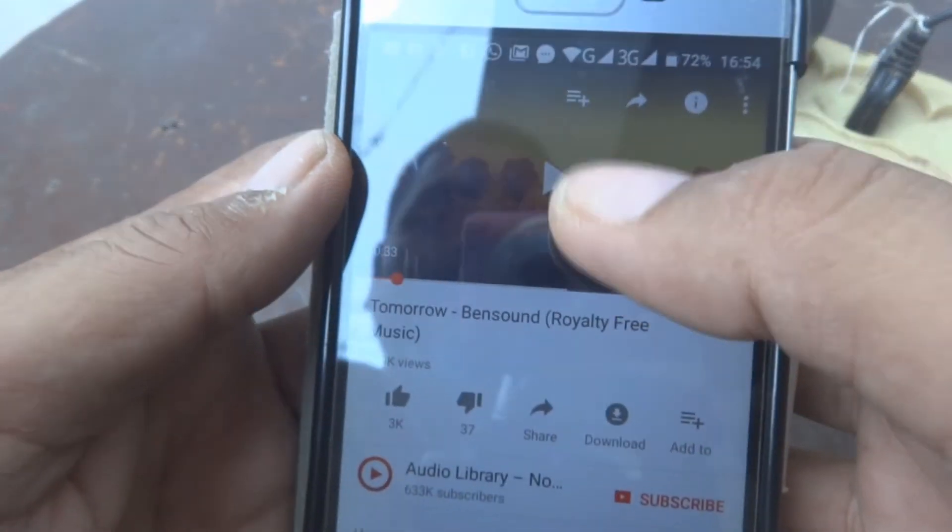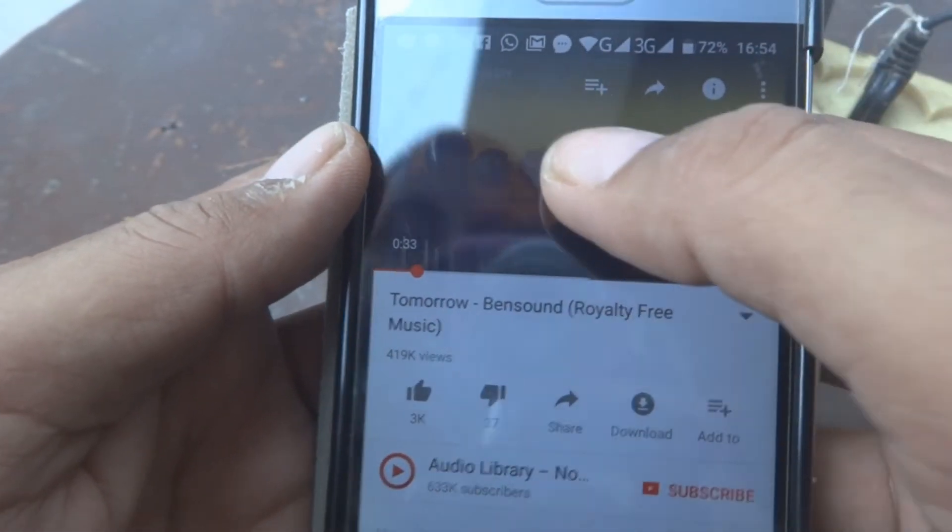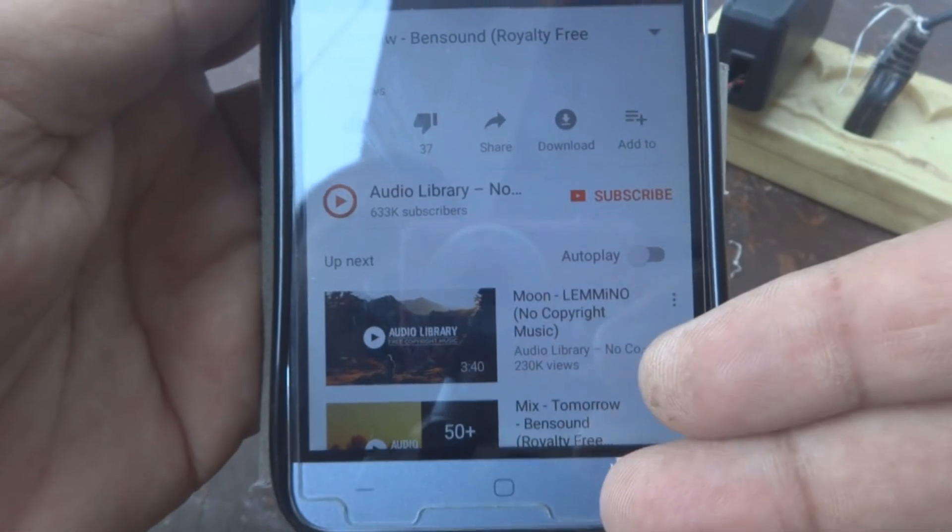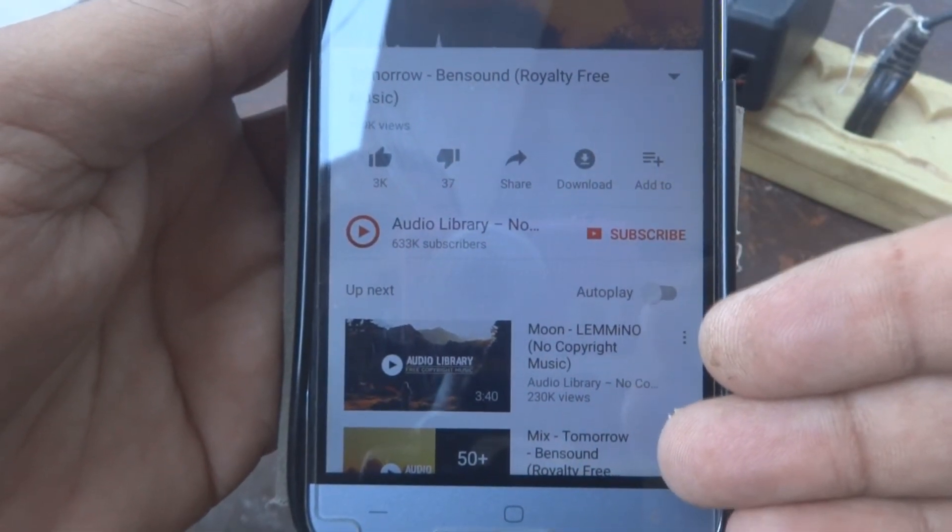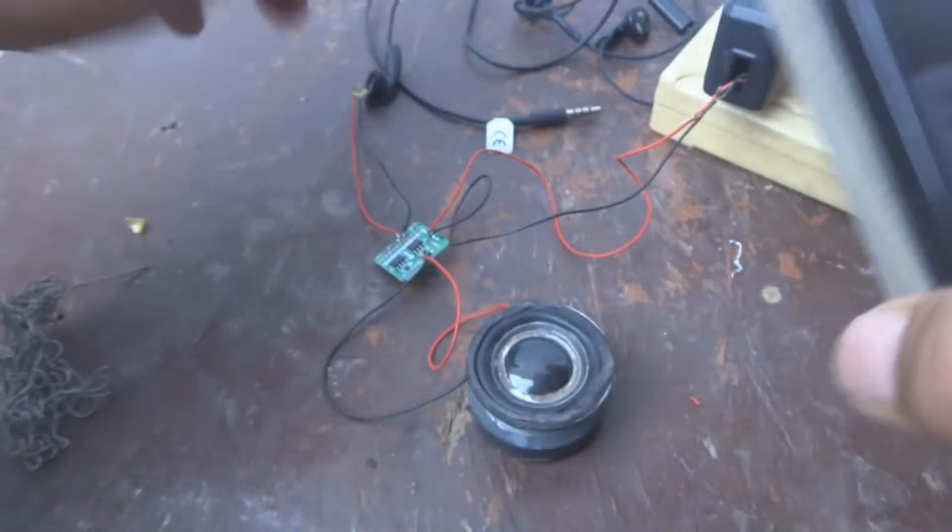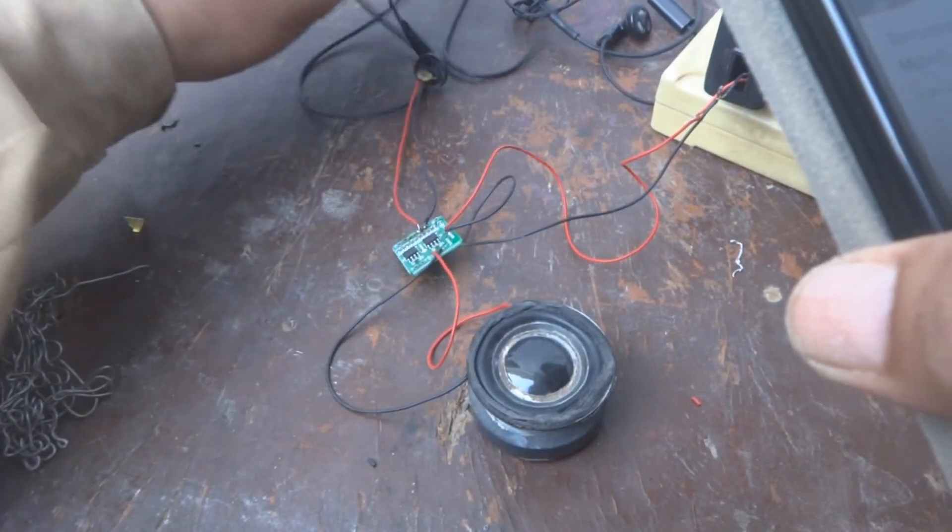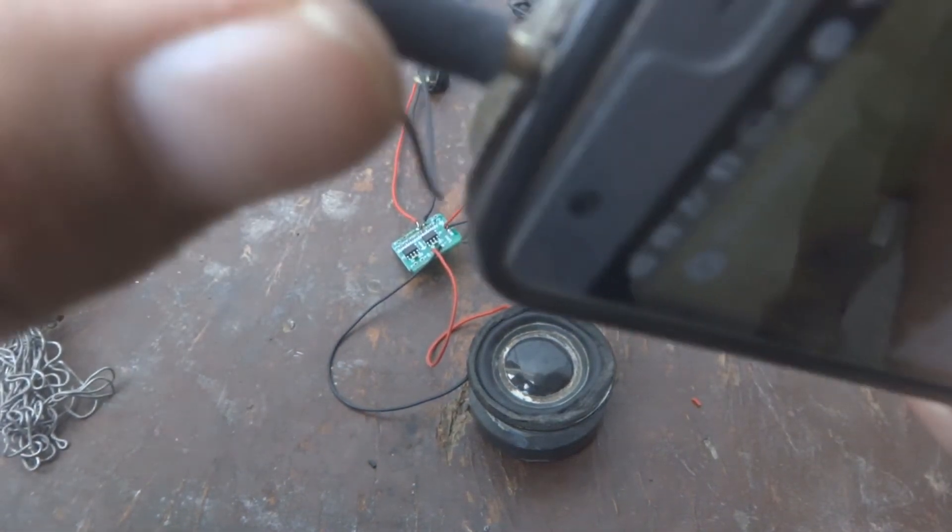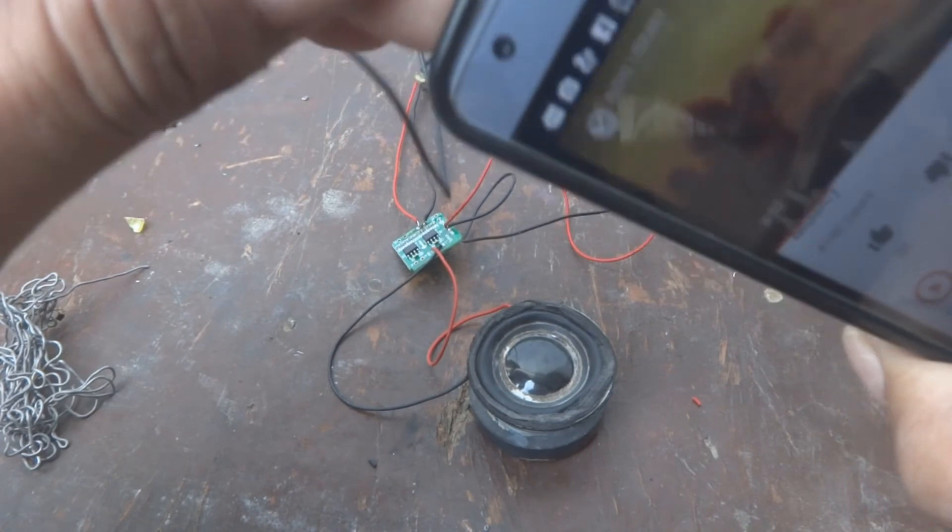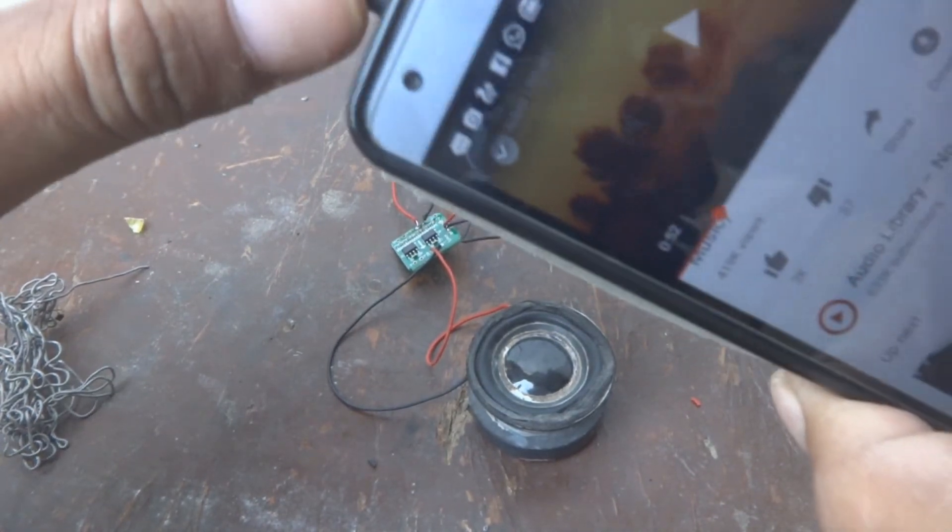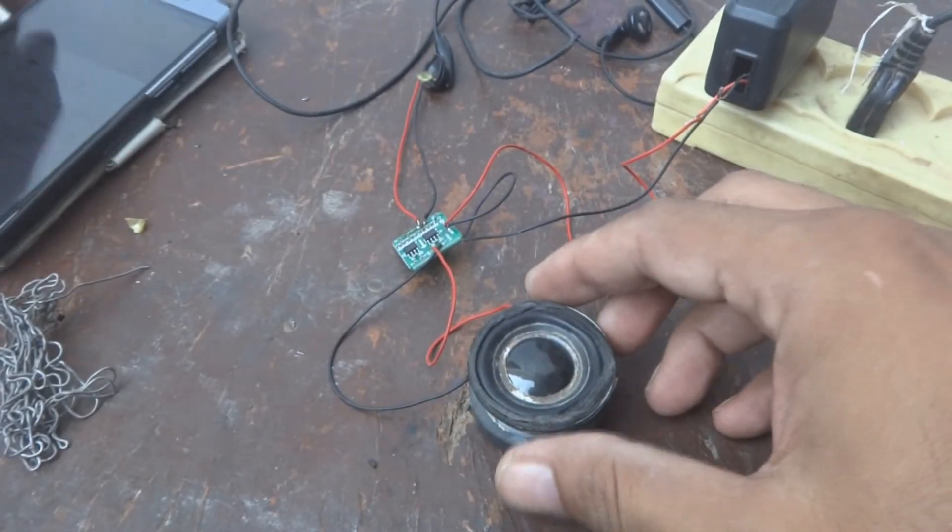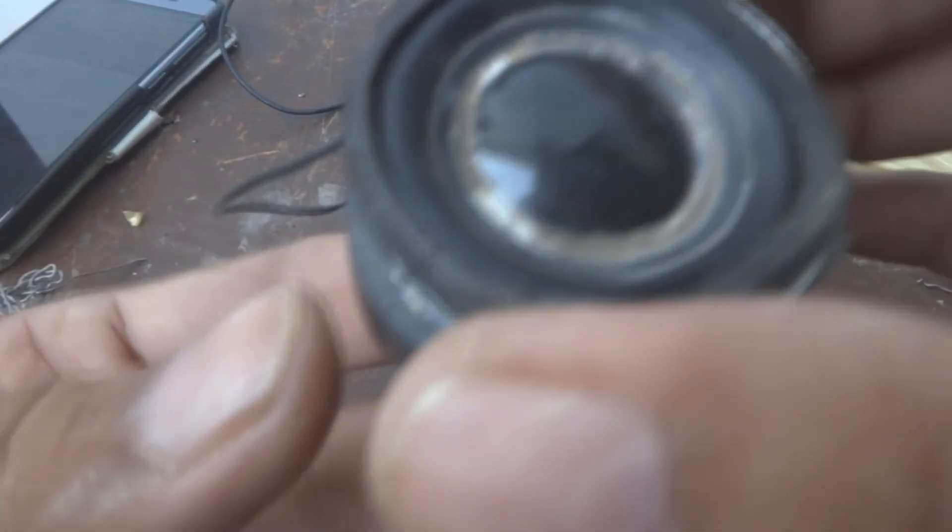I'm playing royalty-free music because we can use it for any video. You can listen on the mobile phone speaker. Now I'm going to connect it to our amplifier by connecting this cell phone. Now you can listen on the speaker.